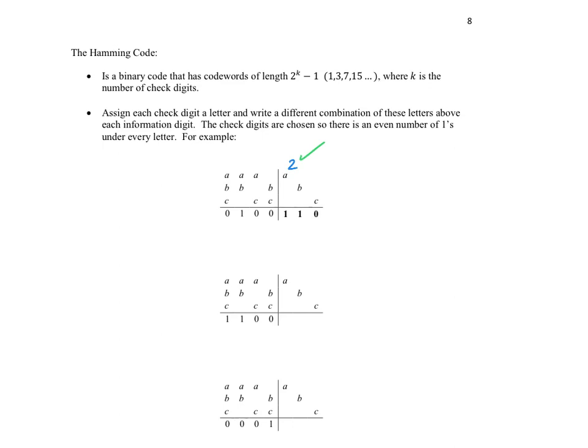So continuing on in this process, counting underneath the B, we'd count 1, nothing there, 2. Underneath the B we have a total of 2 ones, and that's good. That's ready to be sent in terms of the Bs. And then for the Cs, we can check the same thing. There are no ones under the Cs, so we just put a 0 there. And 0 is indeed an even number, so this one is ready to be sent.